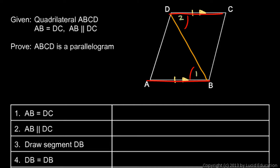Then I can use that to show that the two triangles formed are congruent by side-angle-side. And if the triangles are congruent, then AD must equal BC, because corresponding parts of congruent triangles must be equal. Once I've shown that AD equals BC, it follows that it must be a parallelogram because the opposite sides are all equal — invoking the earlier proof.